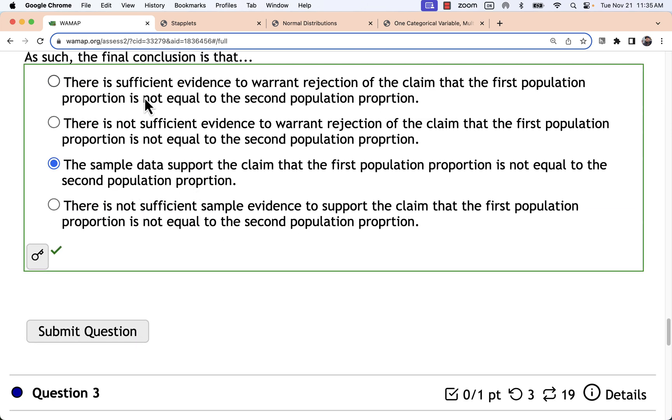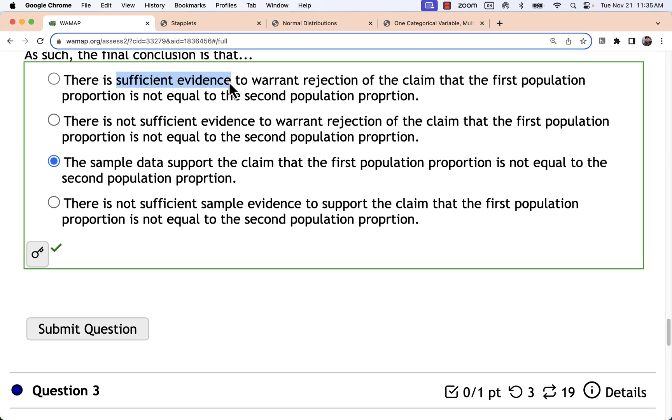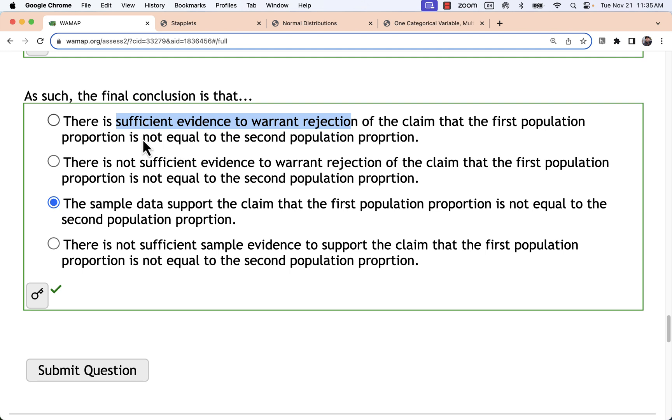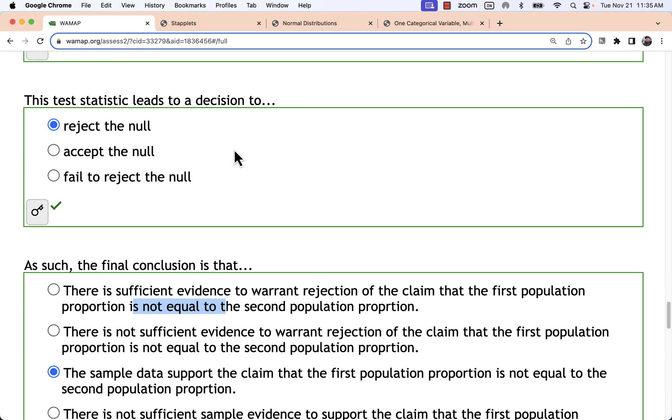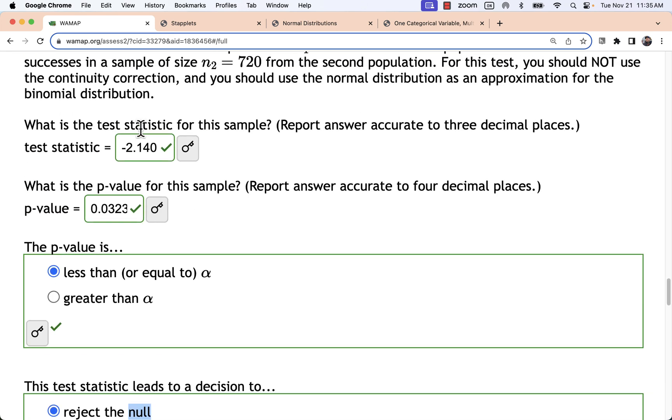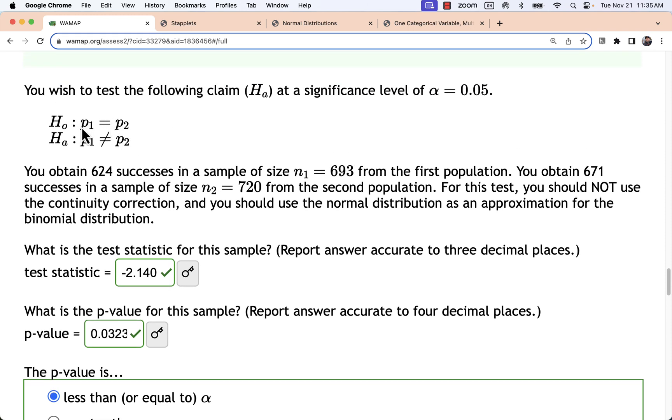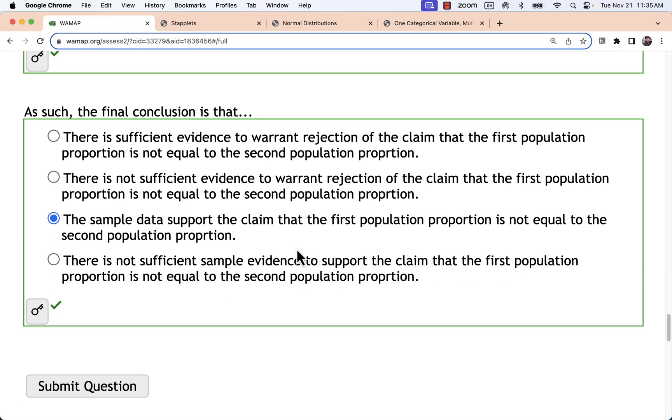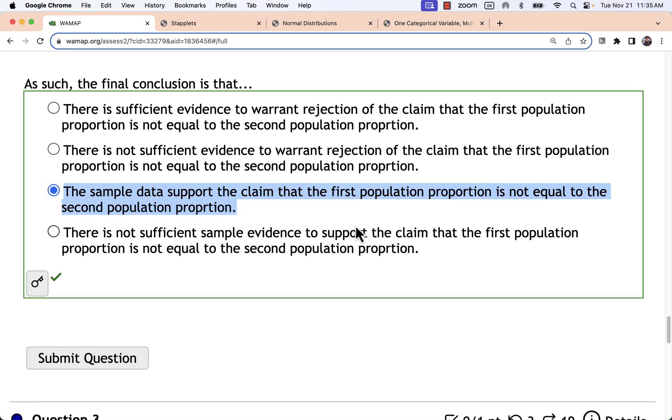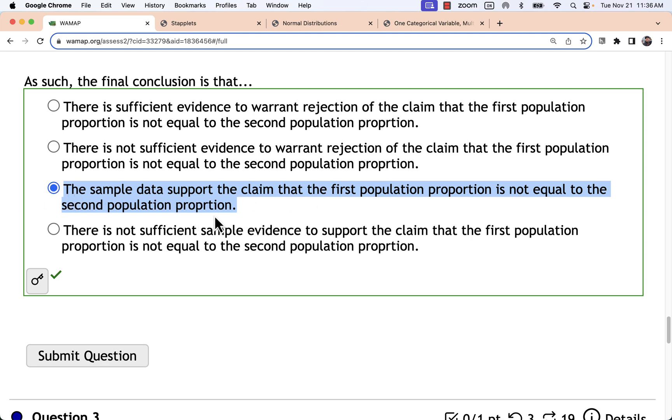And here I at first thought maybe it was this first one because that is sufficient evidence. But then it says the claim of not equal. We wouldn't want to reject the not equal. We want to reject the null. So we could say there's sufficient evidence to reject a claim that they are equal. But that's not one of the choices. It makes the most sense to say this one. The sample data support the claim that they are not equal. So it's really a simple way to say it. But that's the best option for what we've got here.